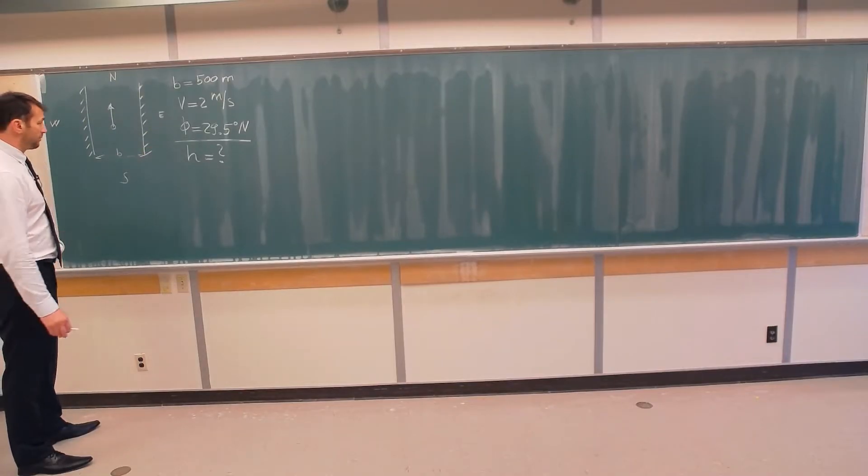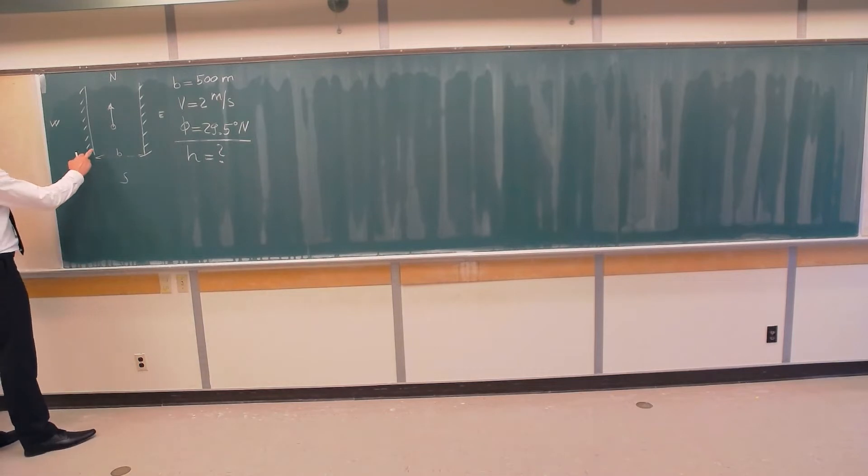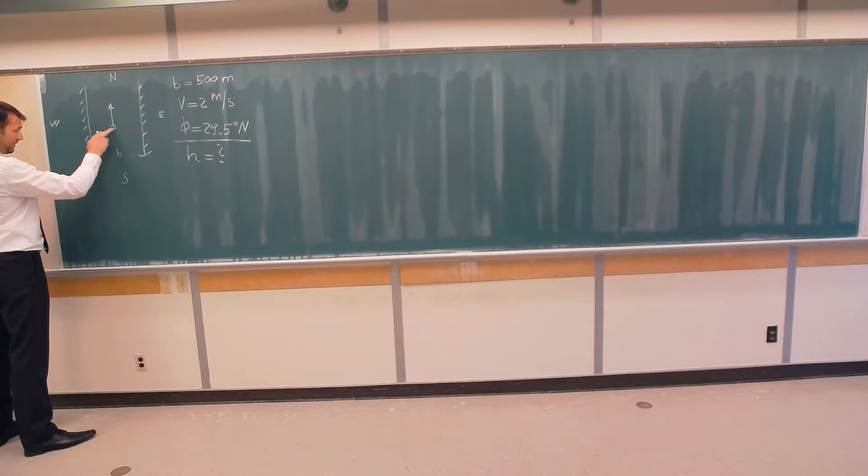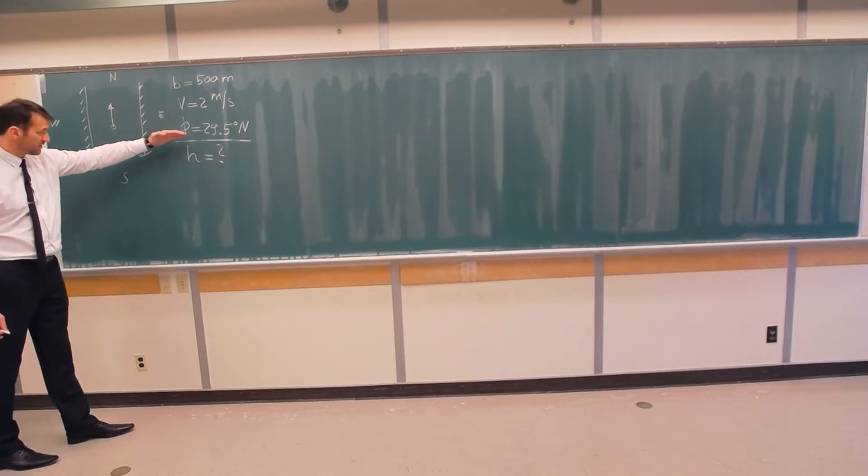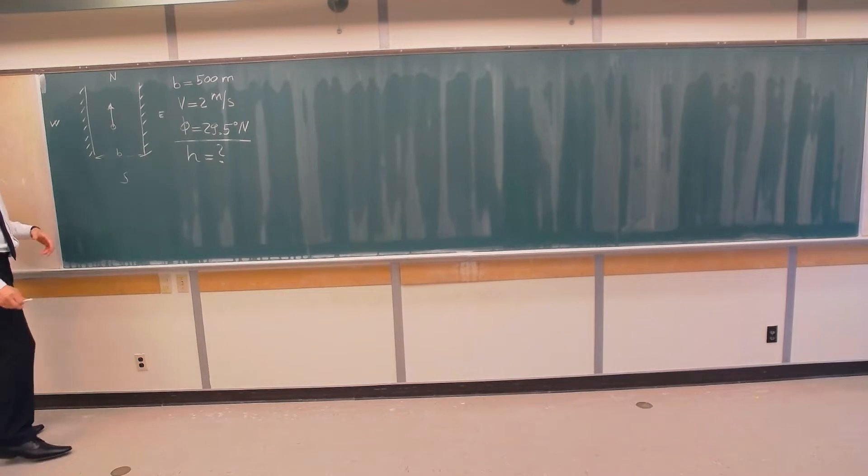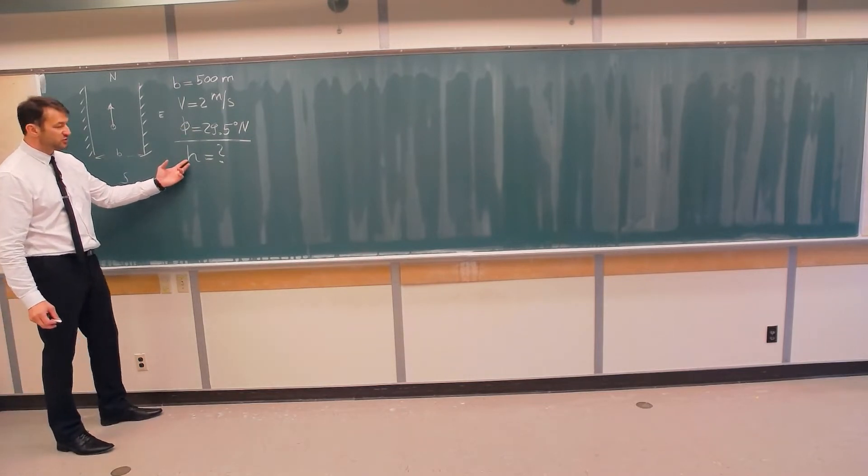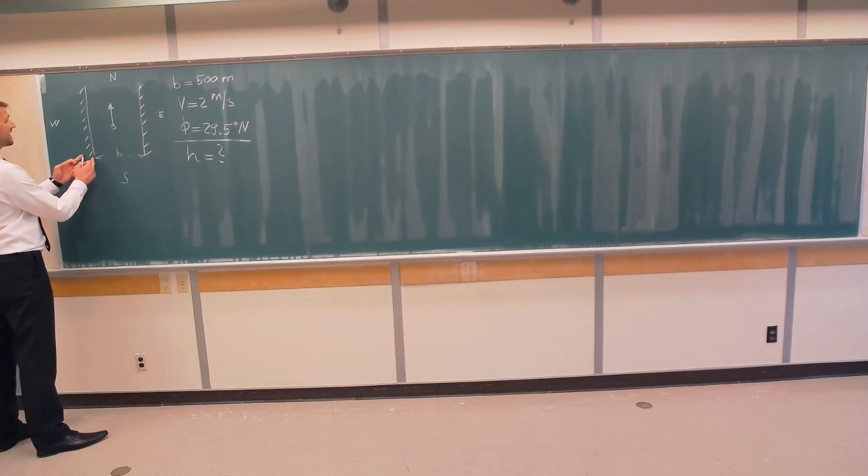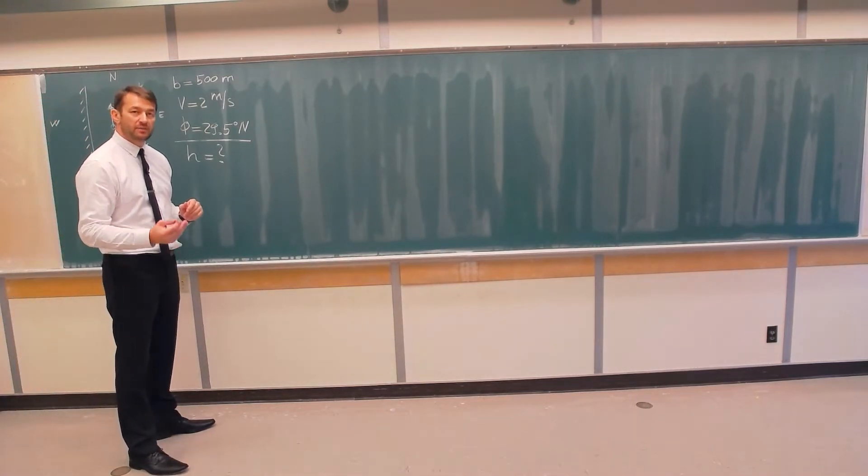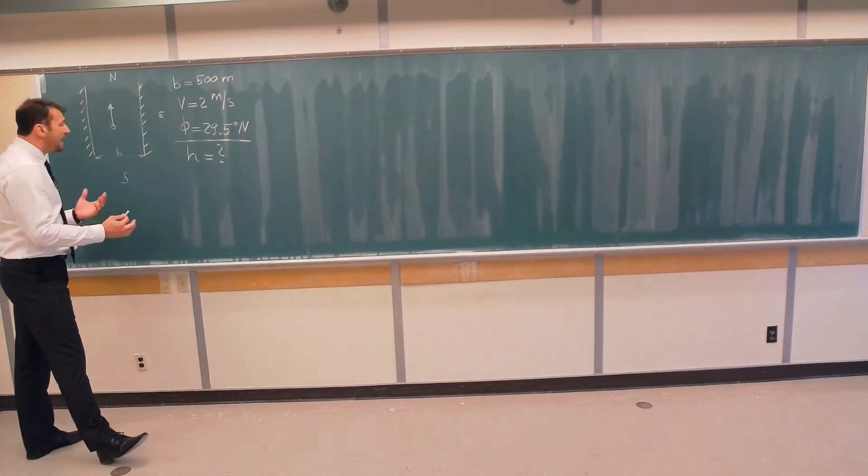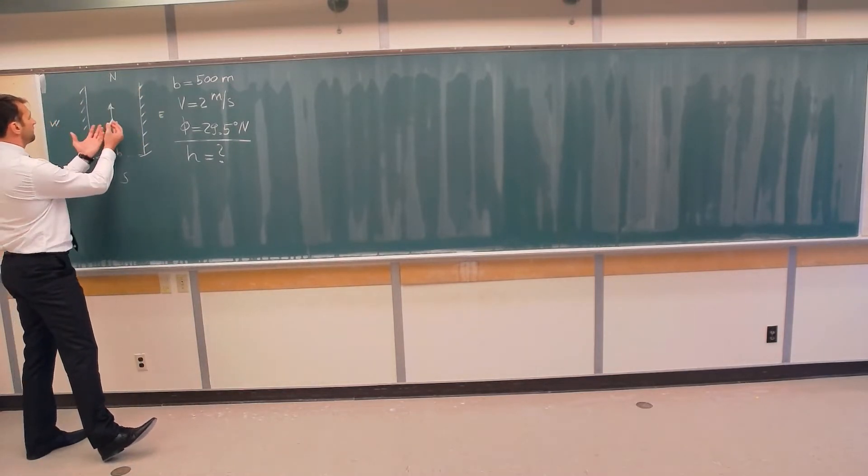So here is the setup for the problem. Here is the river. These are two banks of the river: east, west, north, south. And there is water, a parcel of water, traveling due north in this river. Width of the river is 500 meters. Find the height difference of the water on the west and east sides of the river.